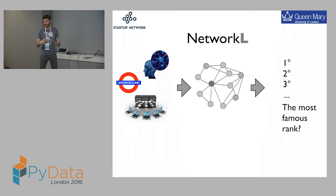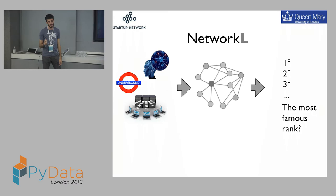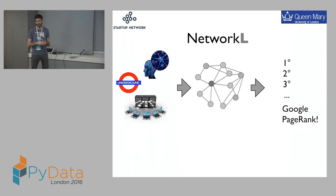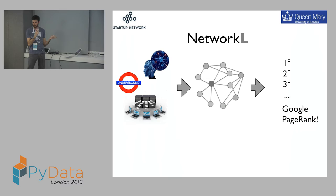You try to understand if your network is resilient to attack or fault tolerant. Usually you rank nodes — you do some analysis on the graph and at the top of the ranking you have the most important node, the most influential people on Twitter, for instance. The most famous rank is PageRank. It's the Google PageRank — they take all the web pages as nodes, with a link between two web pages, and do some maths on this graph.